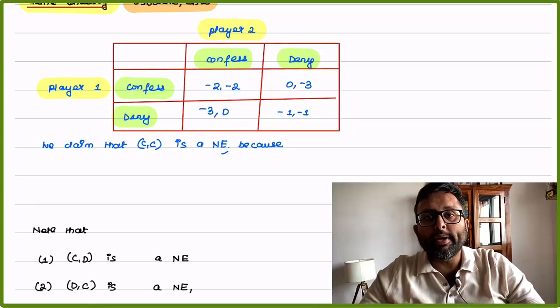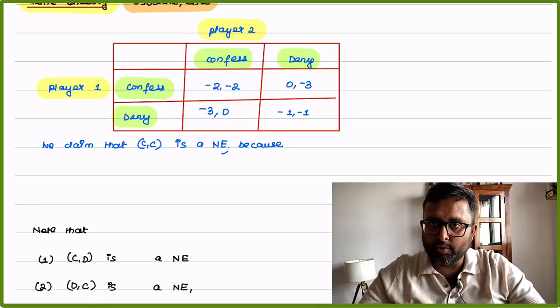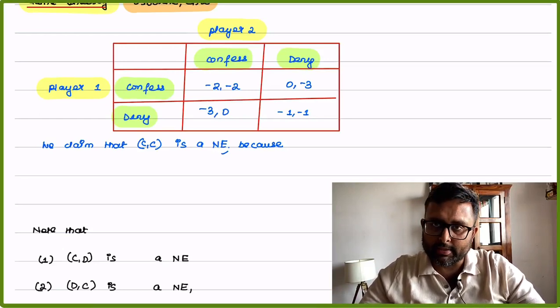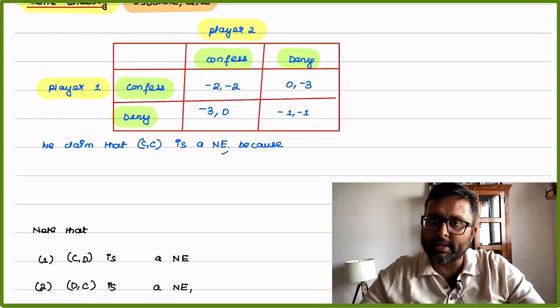We're going to talk about how we technically prove something is a Nash Equilibrium. We have defined Nash Equilibrium in the last class. Now, let's look at one simple example.